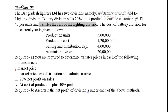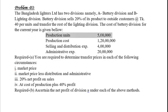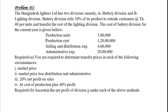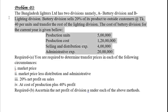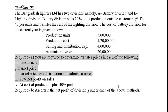The Battery Division transfers products to the Lighting Division. The cost data for the Battery Division for the current year is given. Battery Division produces 5 lakh units. Production cost: 5 lakh units. Selling and distribution expense: some amount. Administrative expense: 20 lakh. This is the total cost information provided.